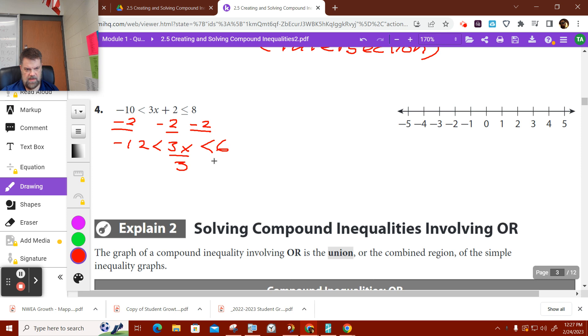To get the x by itself, I divide by 3. Whatever I do on one side, I do on all three sides. I get negative 4 is less than x is less than... Uh-oh! Forgot this little equals sign. See this? You guys have got to pay attention.